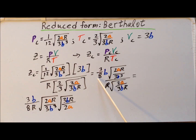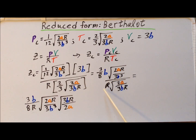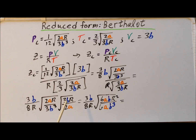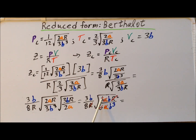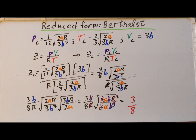We combine 3B divided by 8R using properties of fractions, and use the fact that dividing by a fraction is equivalent to multiplying by the reciprocal. We multiply by 3BR over 2A under the radical sign. Using the property that the square root of X times the square root of Y equals the square root of XY, we pull everything under one radical sign. The 6's cancel, the A's cancel, the square root of R squared is simply R so the R's cancel, and bringing B under the radical sign makes B squared, so all the B's cancel. We are simply left with the value 3/8, so the critical compression factor for the Berthelot gas is 3/8.